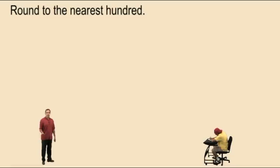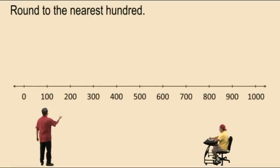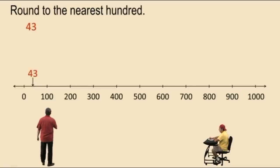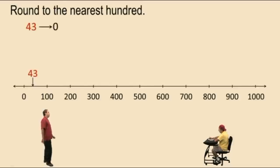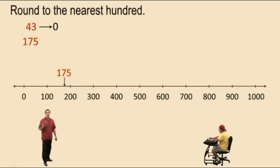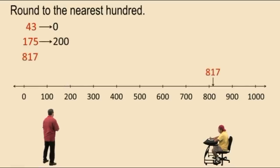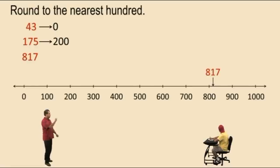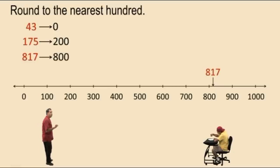Now let's round to the nearest hundred. Again, let's do this on a number line labeled with hundreds. 43 is between 0 and 100 but it's closer to 0, so 43 rounds to 0. 175 is between 100 and 200 but it's closer to 200, so 175 rounds to 200. 817 is in between 800 and 900 but it's closer to 800 — you can see that on the number line — so 817 rounds to 800.